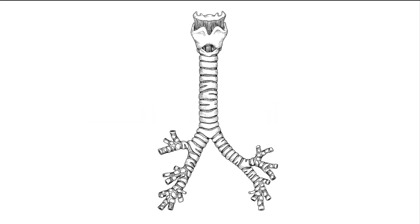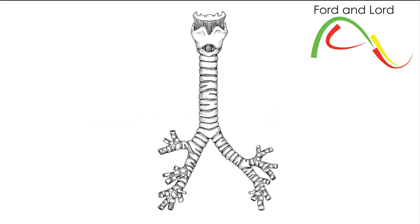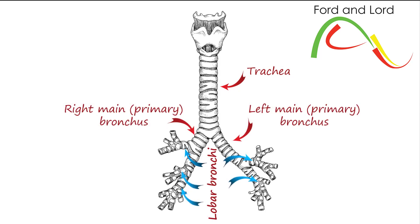In the previous lesson, we learned that the trachea divides into two main bronchi, and the main bronchi divide further into lobar bronchi, also known as secondary bronchi. In this lesson, we will discuss segmental bronchi and bronchopulmonary segments.